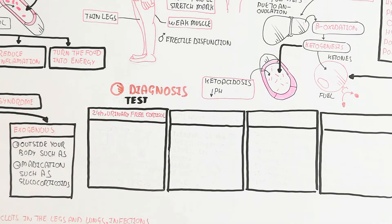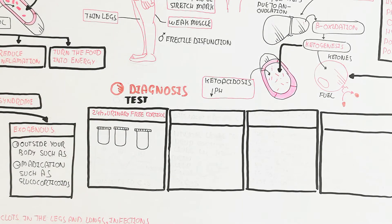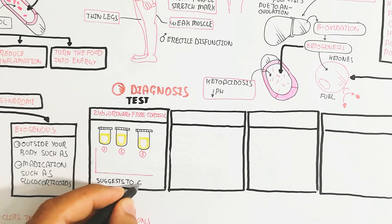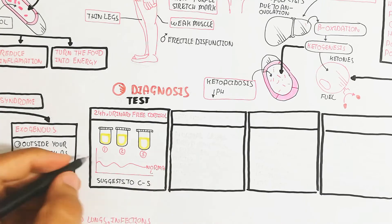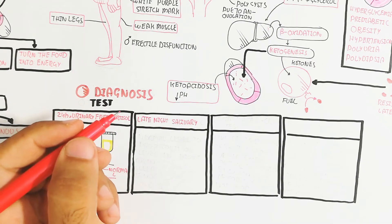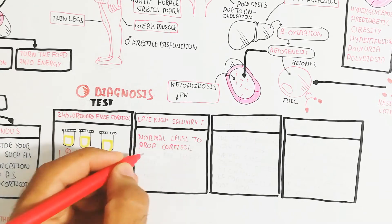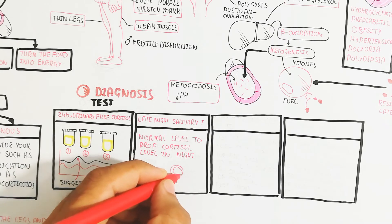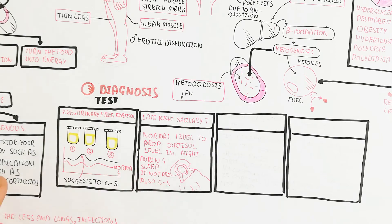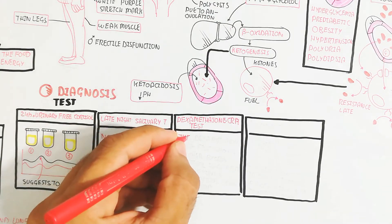Ketoacidosis results in low blood pH. For diagnosis, the 24-hour urinary free cortisol test collects urine samples over 24 hours. An elevated cortisol level on the graph suggests Cushing's syndrome. The late-night salivary test can also be used, as cortisol normally drops at night during sleep — if it does not drop, Cushing's disease is present.